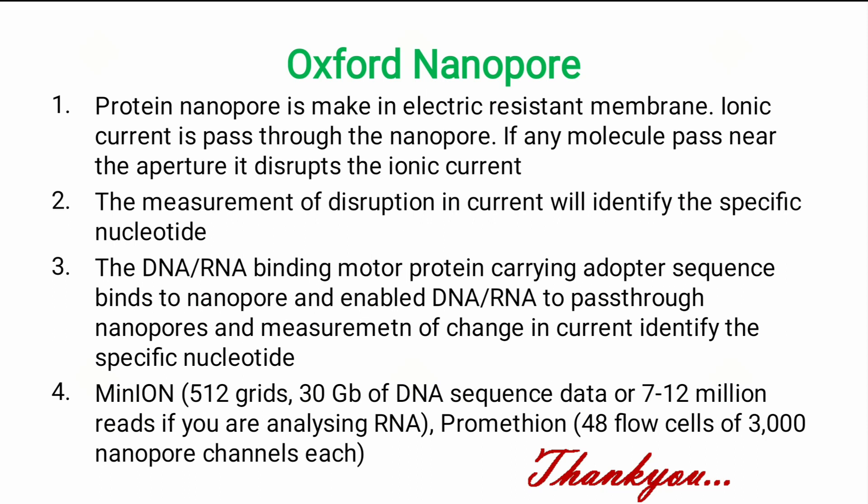The MinION platform consists of 512 channels and is capable of reading 30 gigabases of DNA in a single run. The latest version, PromethION, carries up to 48 flow cells with 3,000 nanopore channels in each. Thank you.